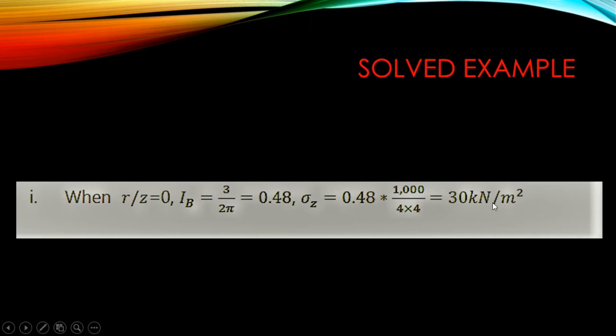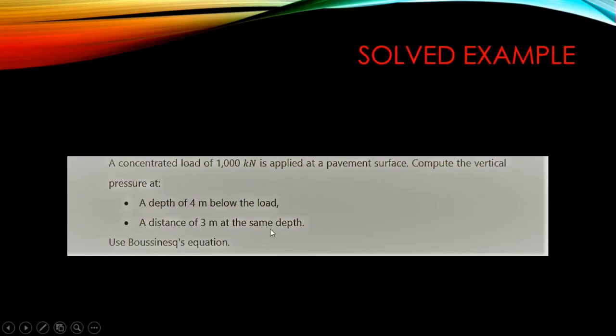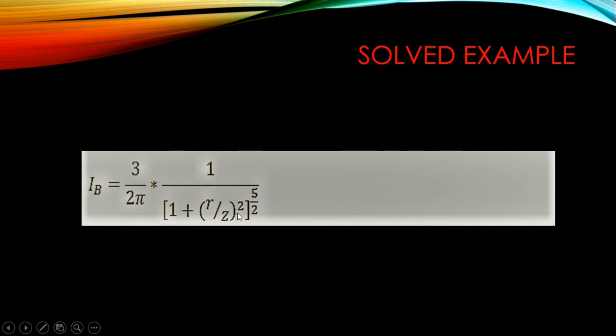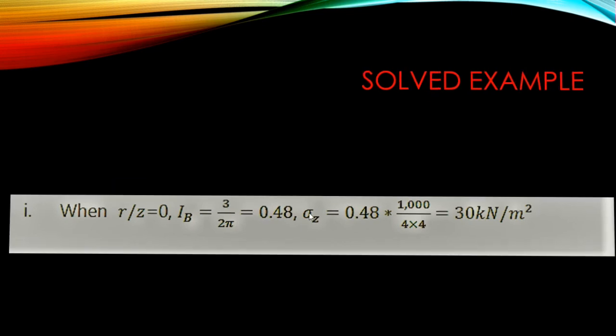For Part B, we calculate the vertical pressure at a horizontal distance of three meters at the same depth of four meters. So r = 3 meters and c = 4 meters. Substituting into the Ib equation: r over c = 3 over 4. This is not zero, so we compute: Ib = (3/2π) × 1 divided by [1 + (3/4)²] raised to the power of five over two.